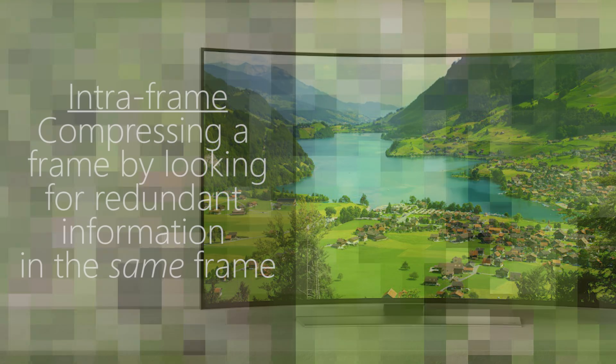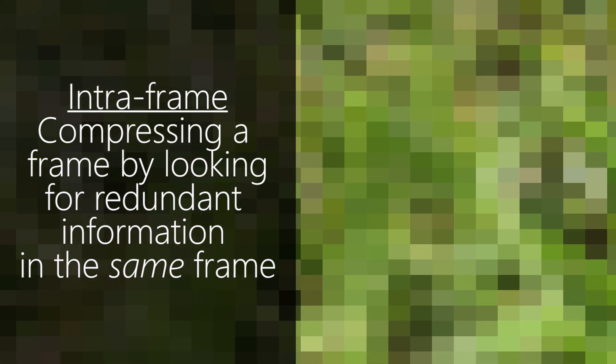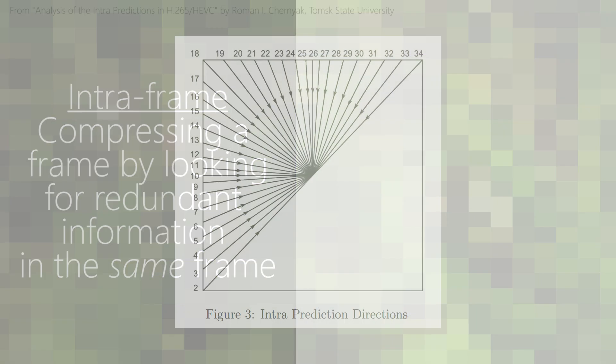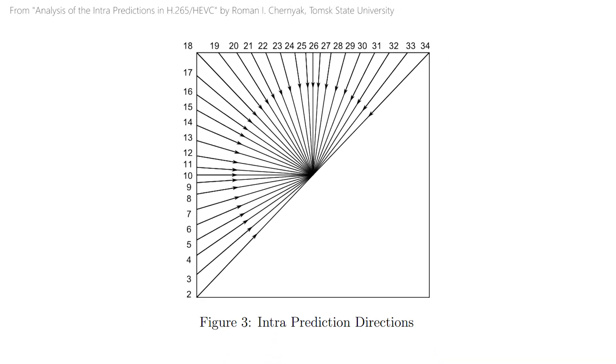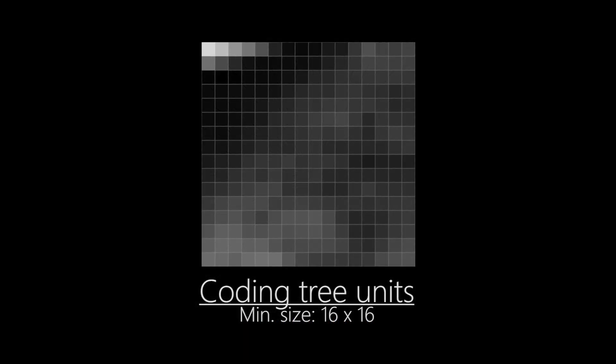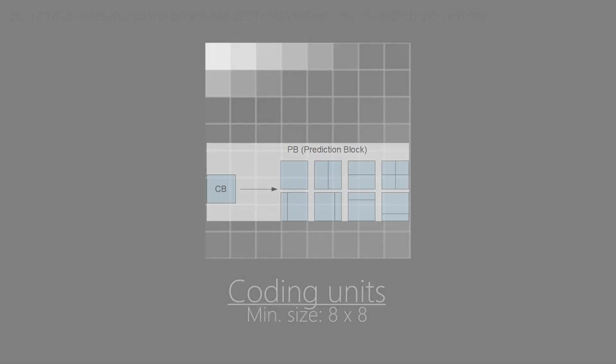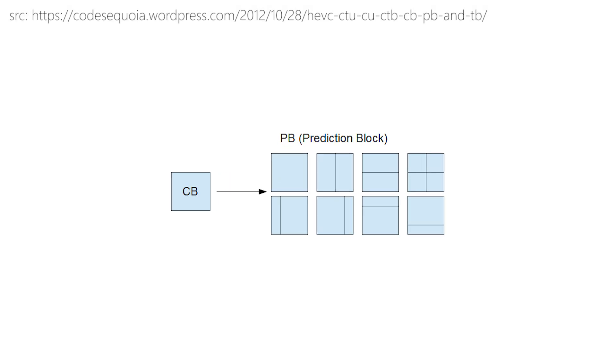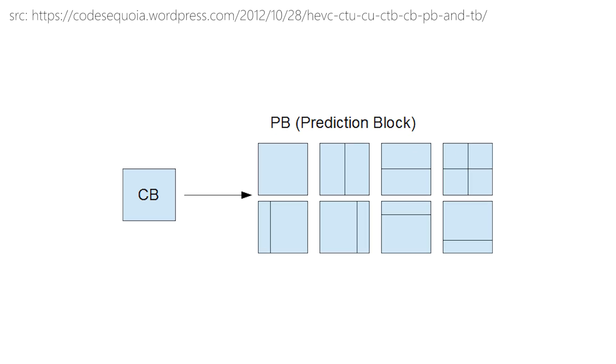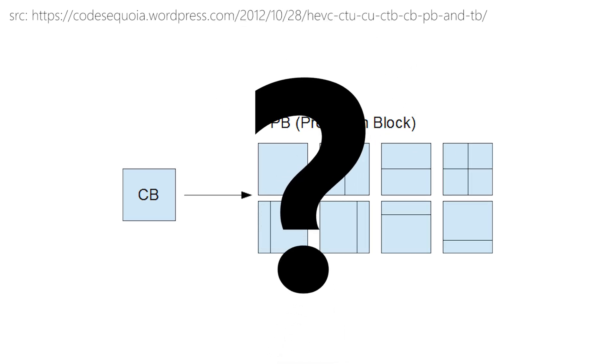The second big improvement has to do with intra-frame compression — in other words, comparing areas within the same frame and looking for redundancy. The improvement is the increase in prediction directions. Coding Tree Units, also called macro blocks, can actually be split further into things called coding units, which can go down to 8x8 pixels. These can be partitioned even further, cut up different ways, into prediction units. We do this so we can mathematically generate pixel values in a block instead of storing them, and therefore massively reduce the size of each frame.